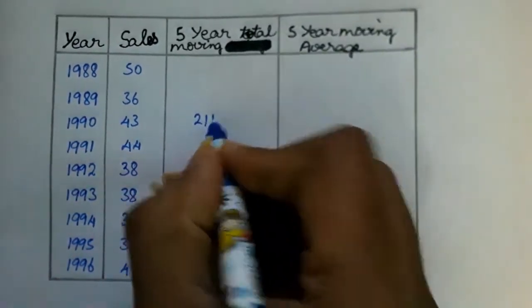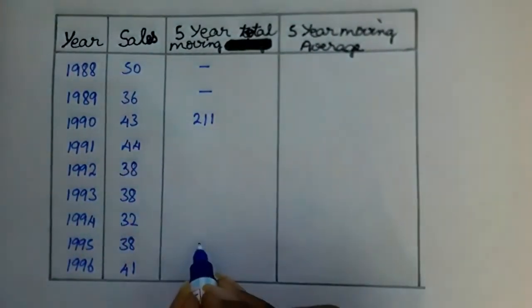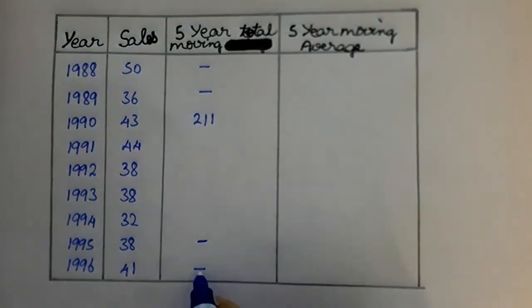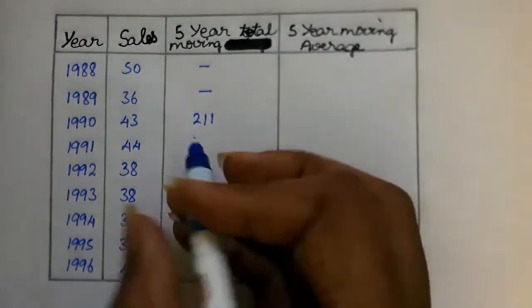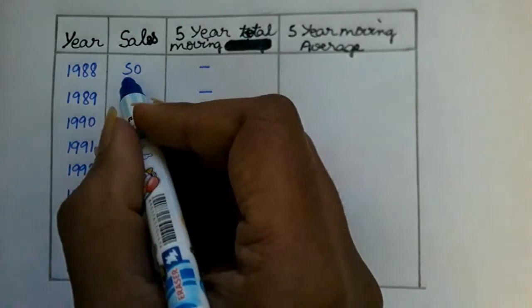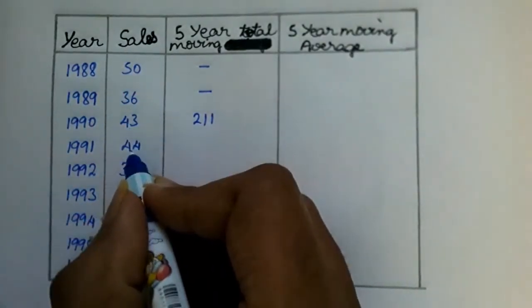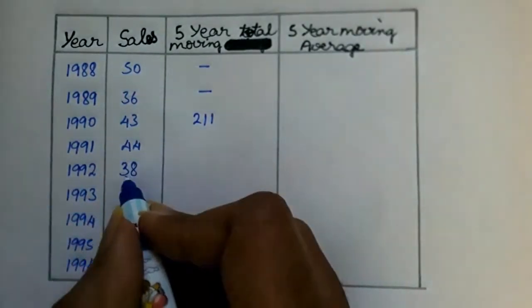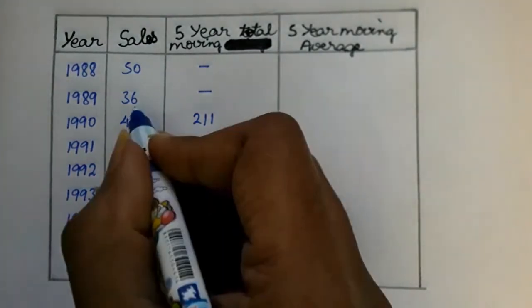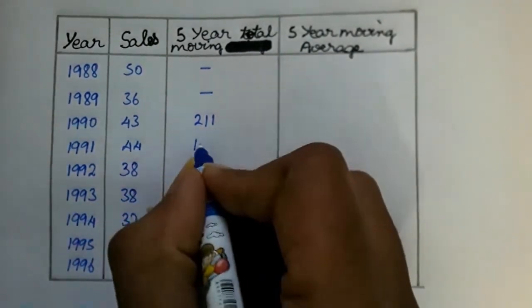We leave the first 2 rows blank and place the result against the middle value. The first two rows are left empty as there is no centered average for them.